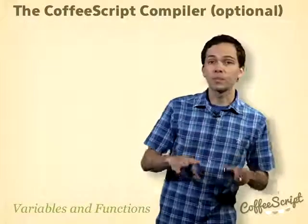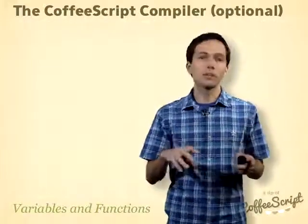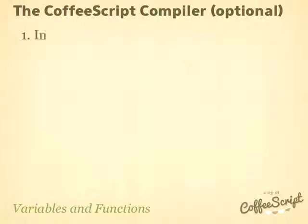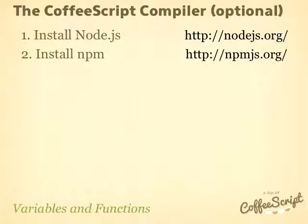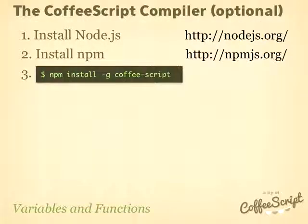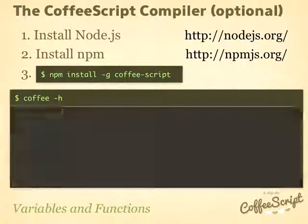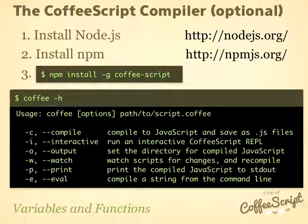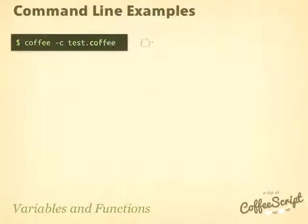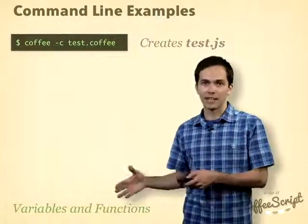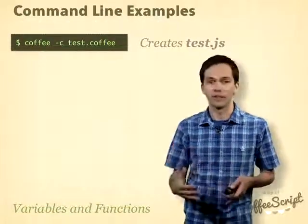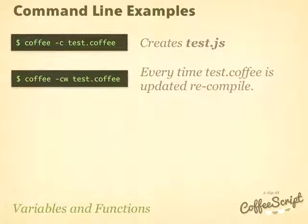I want to talk briefly about how to install CoffeeScript, which is completely optional for this tutorial, and also cover some command line tools and the TextMate bundle. To install CoffeeScript, first install node.js, then install npm — the Node Package Manager — and then use npm to install CoffeeScript. You'll know you did it right if you can type 'coffee -h' at the command line, which gives you all the available commands. Running a command on a test.coffee file will convert it into a test.js JavaScript file. Adding the -w flag will watch the file and recompile it every time it's saved.